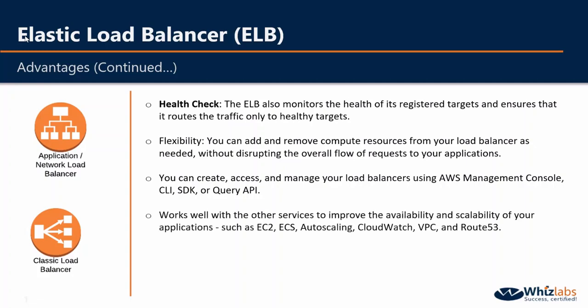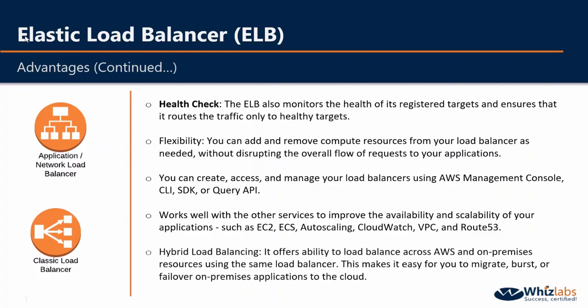It works well with other AWS services to improve the overall availability and scalability of your applications, such as EC2, ECS, Auto Scaling, CloudWatch, VPC, Route 53, and more. It supports hybrid load balancing, which is one of the major advantages of using Elastic Load Balancer — it offers the ability to load balance across AWS and on-premises resources using the same load balancer. This makes it easy to migrate, burst, or even failover on-premises applications to the cloud.